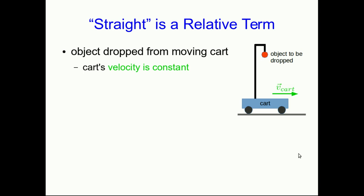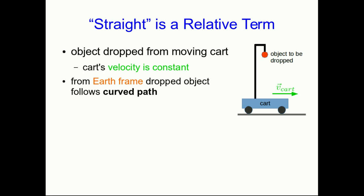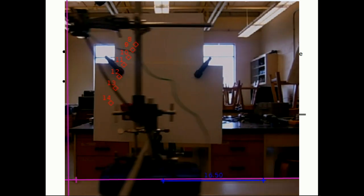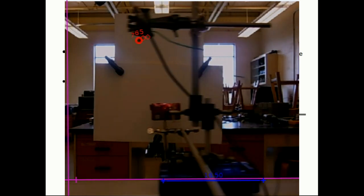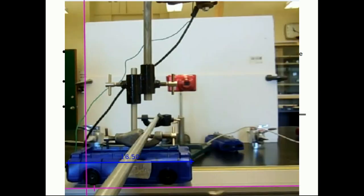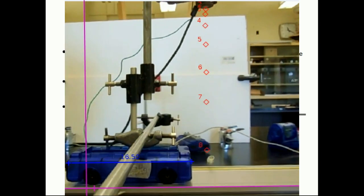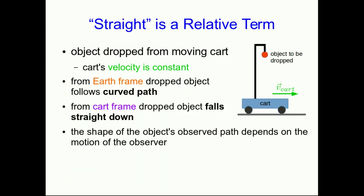We're going to start with a specific example. We're going to have a cart which is moving along at a constant velocity, and an object attached to it which can be dropped. What we see when we view this through a camera fixed to the lab bench — so it's in the earth frame — is that the dropped object follows a curved path. On the other hand, if we view it through a camera attached to the cart, the object falls straight down. This shows us that the shape of the object's observed path depends on the motion of the observer.